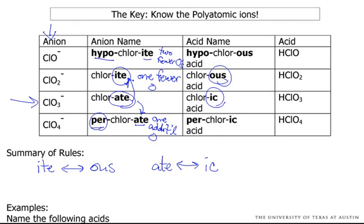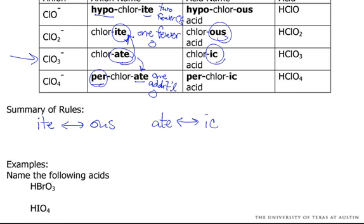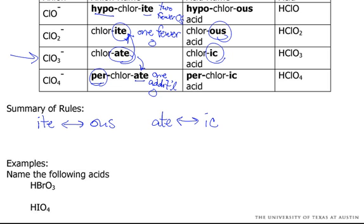Let's do a few examples. For these first two examples I'll leave the table in view. When you're studying, you don't want to have the table in view — that's cheating your brain; your brain isn't working hard enough. So let's look at HBrO₃. The anion is BrO₃⁻. The harder part is naming the anion, so let's name it first and get the hard stuff out of the way.